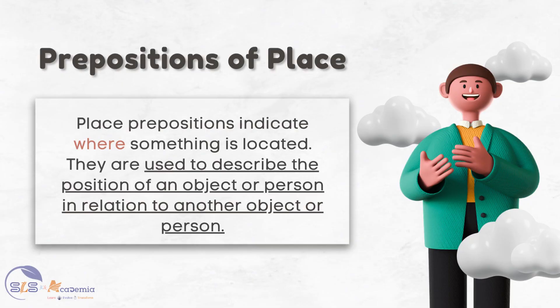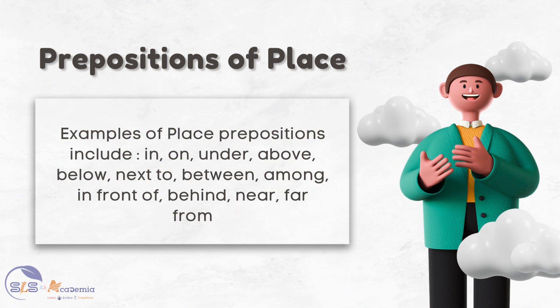Place prepositions indicate where something is located. They are used to describe the position of an object or person in relation to another object or person. Examples of place prepositions include: in, on, under, above, below, next to, between, among, in front of, behind, near, and far from. Let us look at each of them.